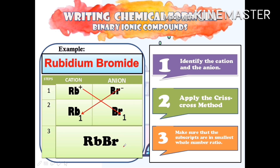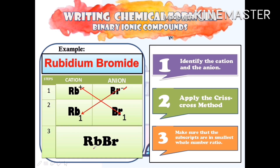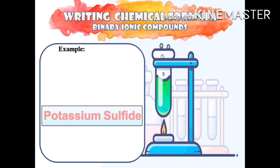This formula means that to produce a molecule of rubidium bromide, we need 1 atom of rubidium and 1 atom of bromine. Take note: if the charges of the cation and the anion are equal in magnitude, we will combine the ions in a 1-to-1 ratio. We have a 1+ charge and a 1− charge, so we combine them in a 1-to-1 ratio: 1 atom of rubidium and 1 atom of bromine.